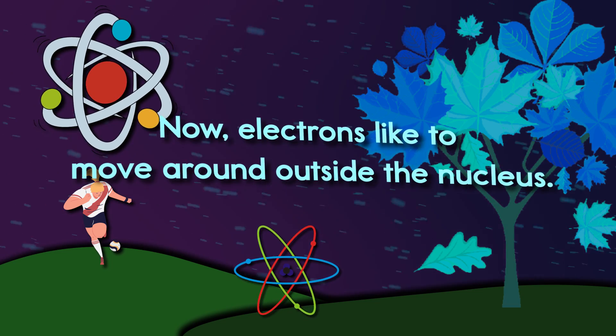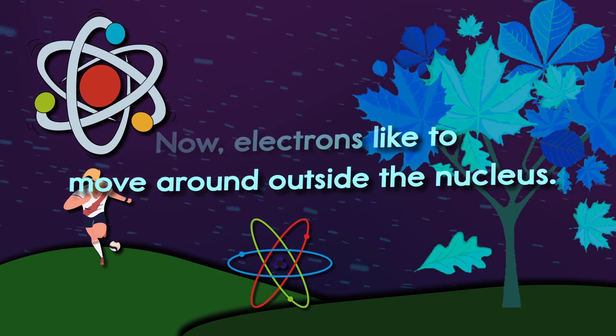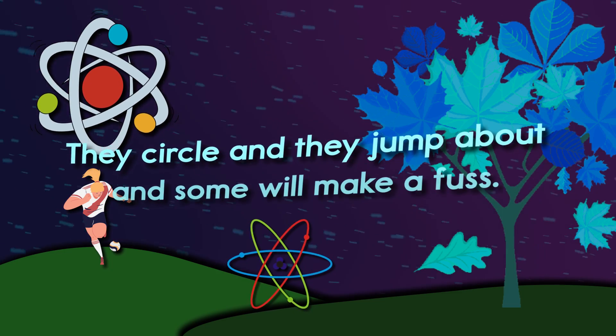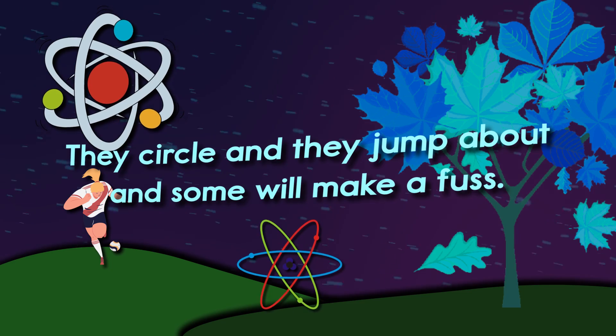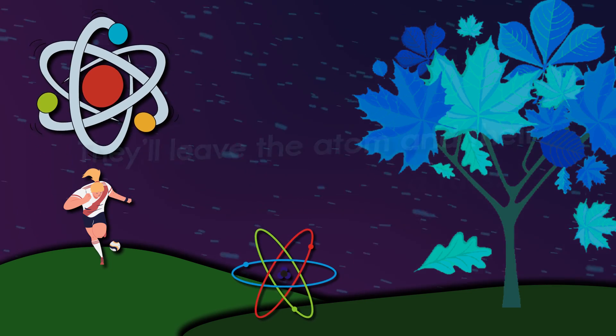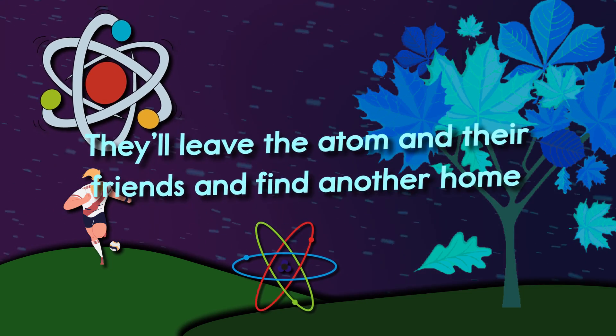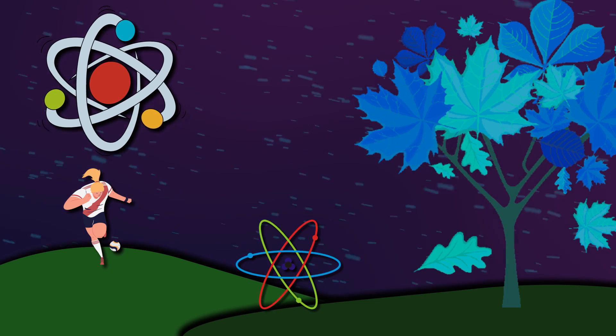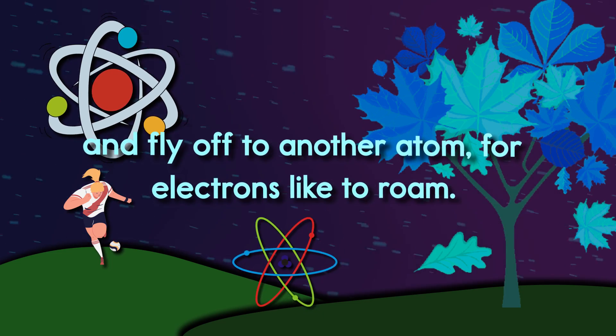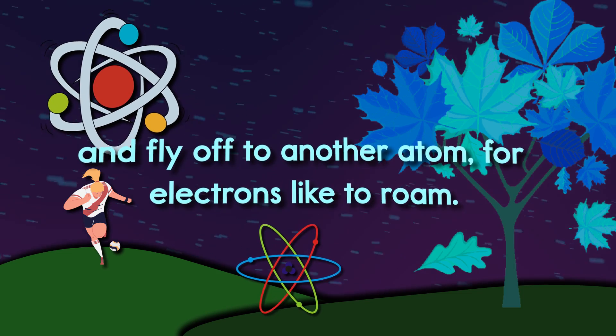Now electrons like to move around outside the nucleus. They circle and they jump about, and some will make a fuss. They'll leave the atom and their friends and find another home, and fly off to another atom, for electrons like to roam.